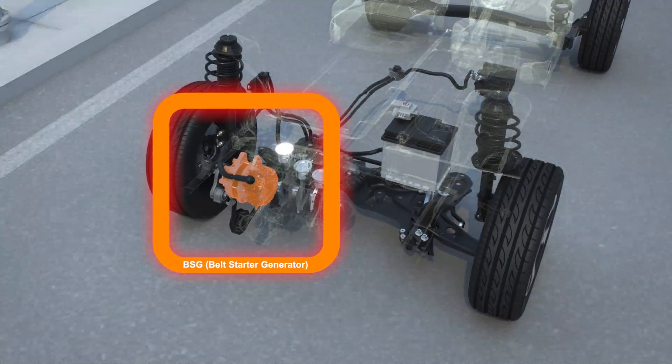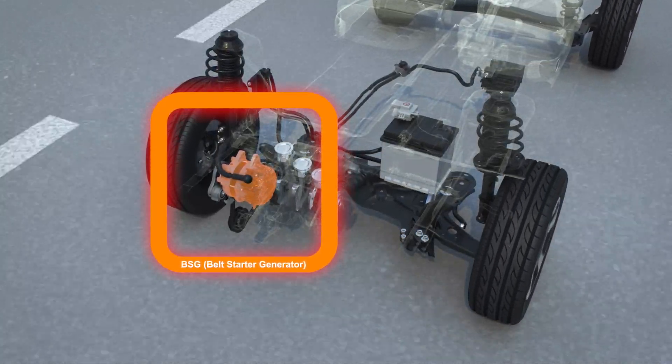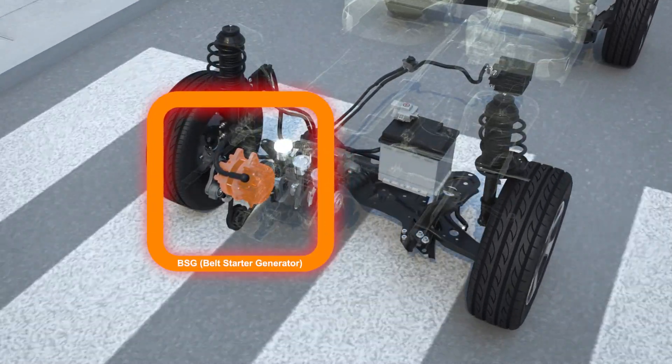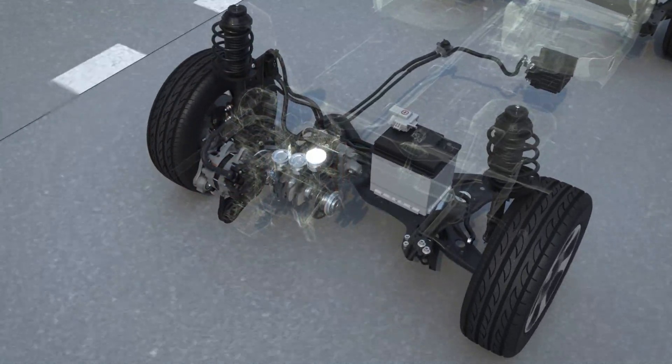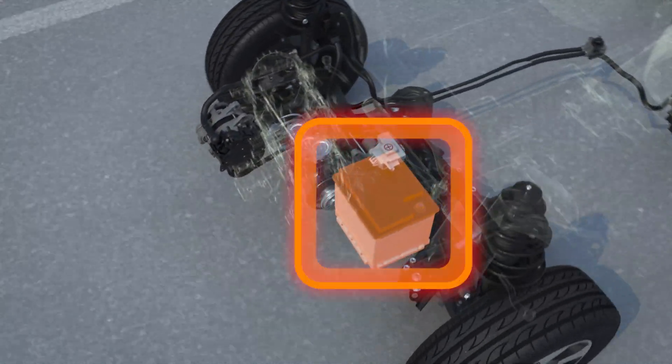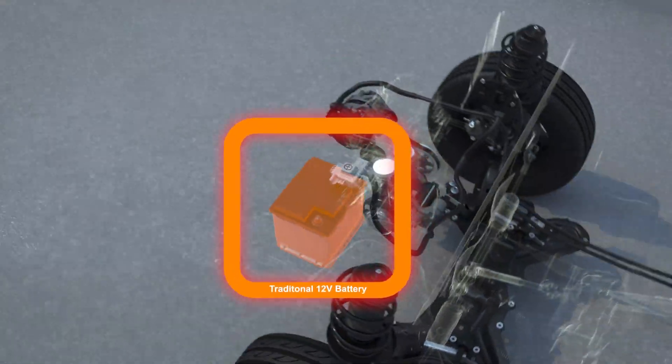It also assists when the car starts back up after a short stop, for example at the lights or in a traffic jam, all in combination with the new 3-cylinder 1000 engine.